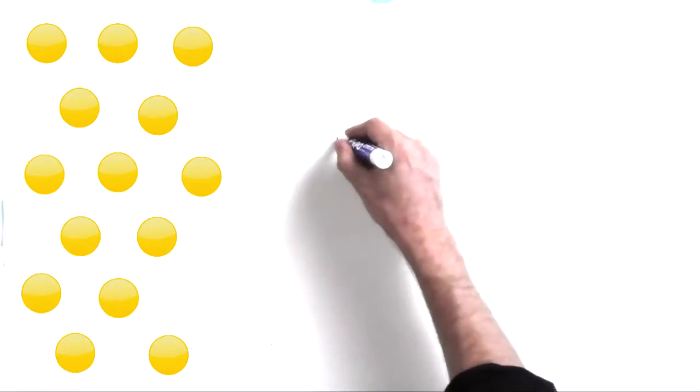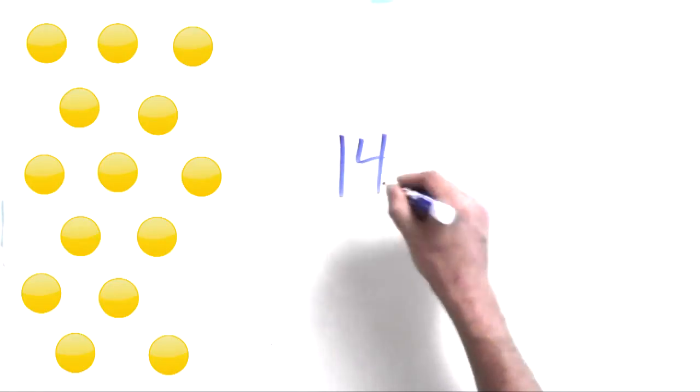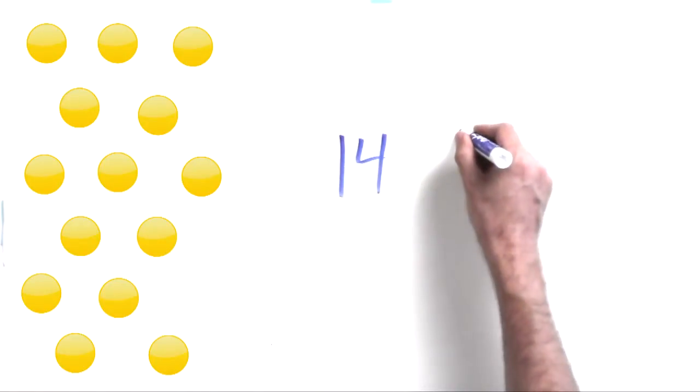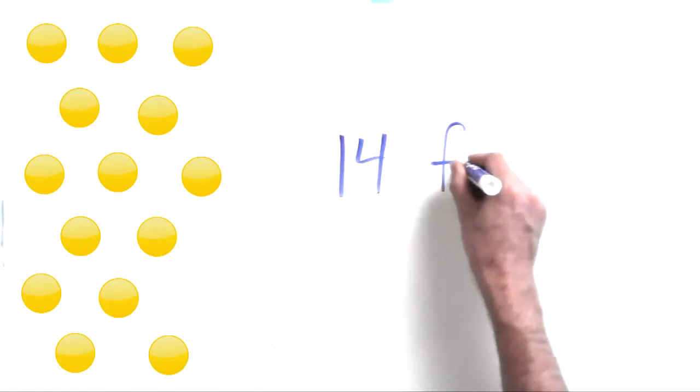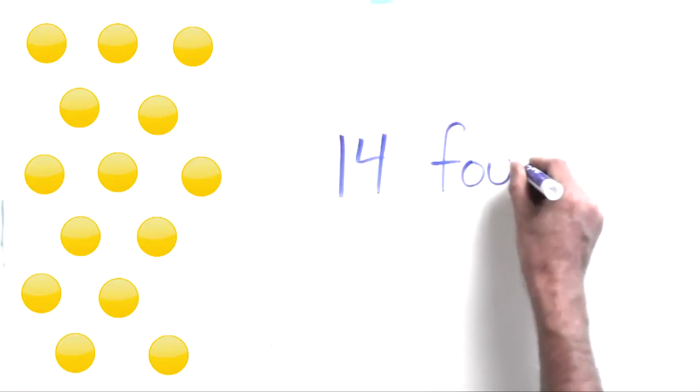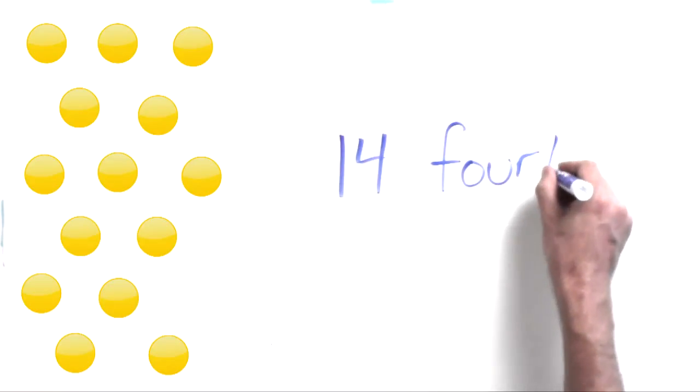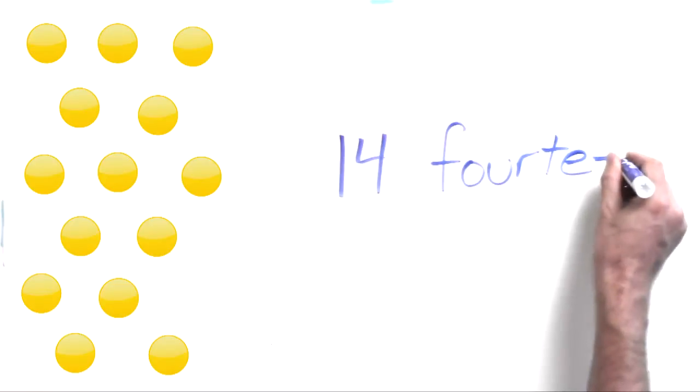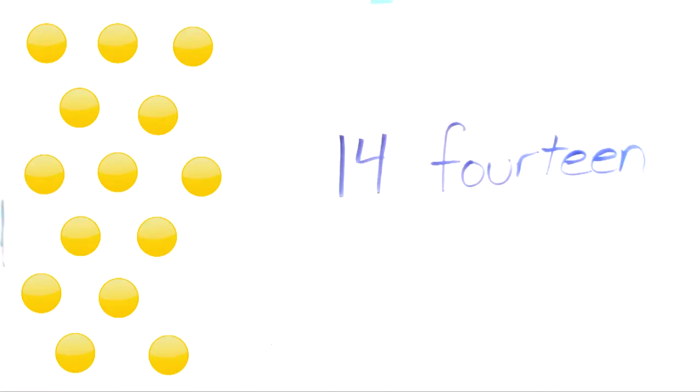There it is. We have 14 circles. 14. And here's how we write the word, we write a 4 and then teen. Fourteen.